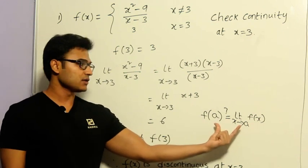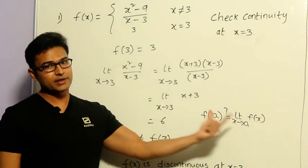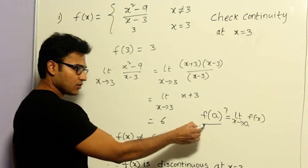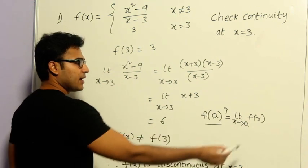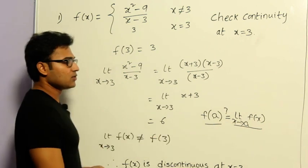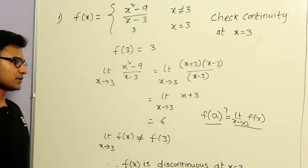If these two are equal, we can say that it is continuous. If these two are not equal, we can say that it is not continuous. So what is it? The function value at a point A and the function value as we approach the point A. So we have to check and compare these two points.